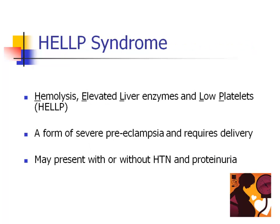HELLP is an acronym for hemolysis, elevated liver enzymes, and low platelets. These findings are considered to be a severe form of pre-eclampsia, even if other criteria are not met. Management includes administration of intravenous magnesium sulfate for seizure prophylaxis and delivery.